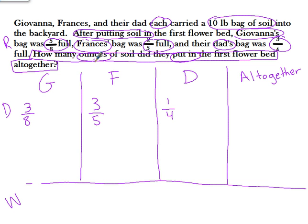But we need to figure out how much of the ten-pound bag it is in ounces. So we know one pound is equal to 16 ounces. That means that ten pounds would be equal to 160 ounces.